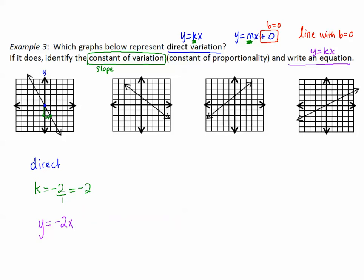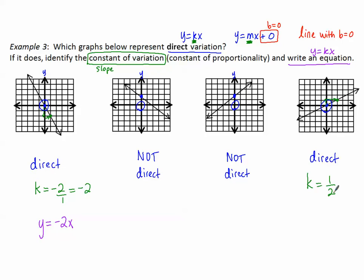Let's look at the next graph. Where is the y-intercept? It's not at 0, so not direct variation here — it's a line where the y-intercept is not at 0. The next graph does go through the origin, so that one is direct variation. Let's find k: k is the slope. Finding another point, it looks like I'm going up 1 over 2, so k is one-half, and our equation is y equals one-half x.